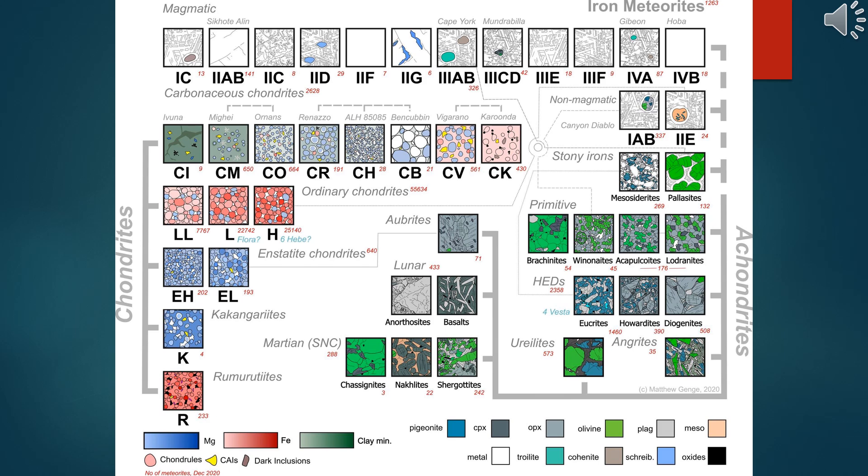Classification by meteorite group. Chondrites: primitive meteorites containing chondrules, small spherical mineral inclusions, and typically rich in iron-nickel. Achondrites: meteorites with a homogeneous mineral composition, lacking chondrules and originating from bodies that have undergone melting processes. Metallic and iron meteorites: primarily composed of iron and nickel with a characteristic Widmannstätten pattern. Measure density: the density of a meteorite can aid in identification since metal-rich meteorites typically have higher densities.